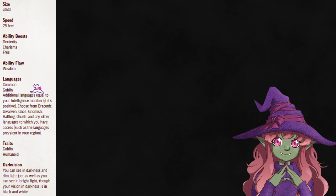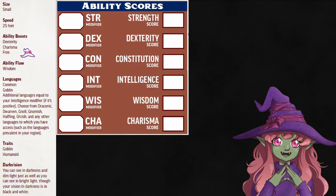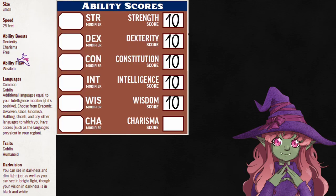We start out with a couple of languages — in my case goblin and common — but you'll get more later on if you're smart. Next up, we have boosts and flaws. All of our stats are going to start at a baseline of 10. Add two for a boost, take two for a flaw. If it says free, that means you can put it wherever you want. Just don't double up with something else on that step.